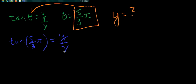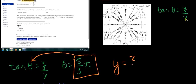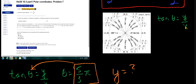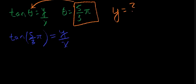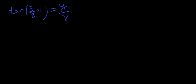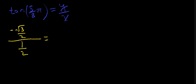Tangent of five-thirds pi — where on the graph is five-thirds pi, and what are our x and y coordinates so we can solve? We notice that five-thirds pi is right here on the unit circle. Our x coordinate is one-half and our y coordinate is negative root three over two. So we solve that to get the tangent of five-thirds pi: we have negative square root three over two divided by one-half, and simplifying that gives us negative root three.